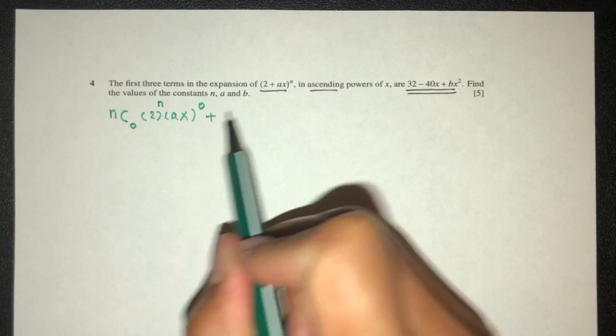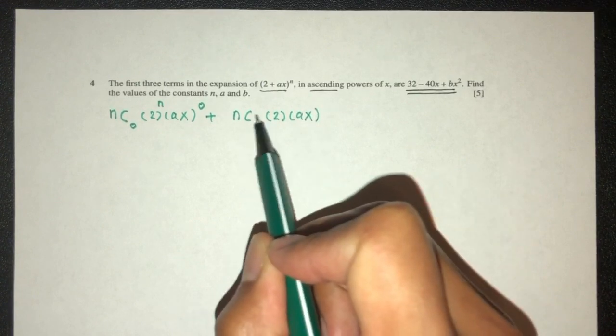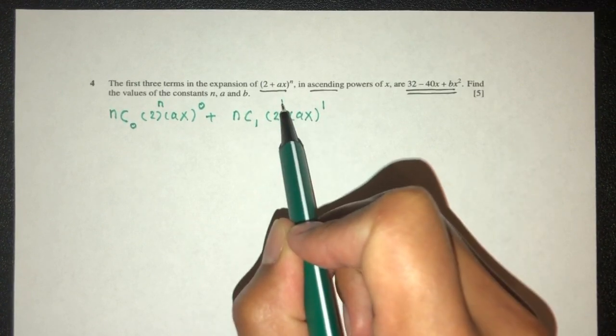Plus n choose 1, that should be this, and that should be this. Here it is 1, has to be 1 as well, and this will be n minus 1.